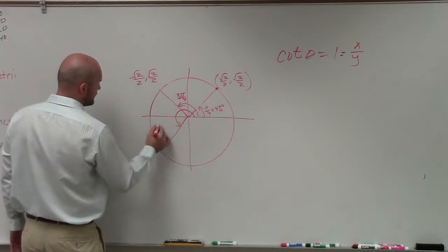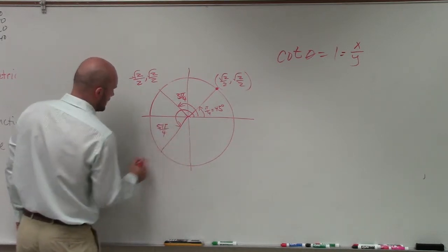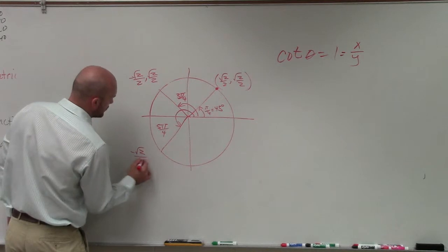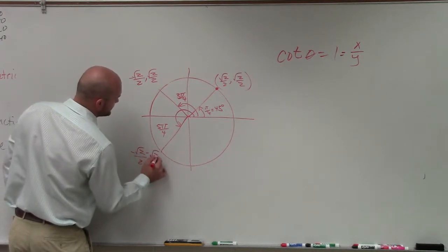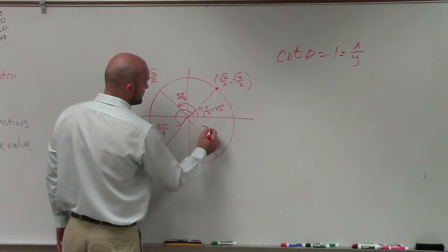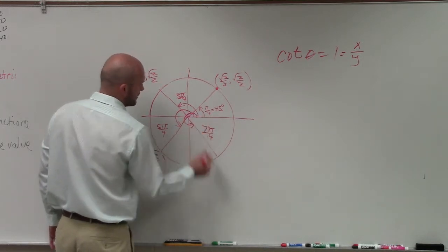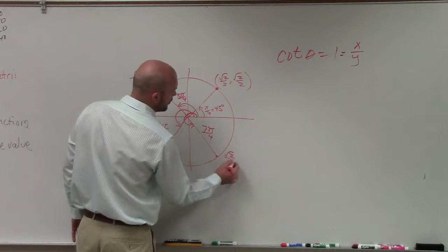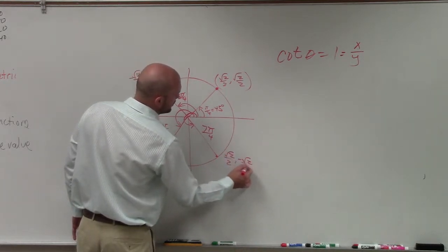Here, at 5π over 4, I have negative square root of 2 over 2, comma, negative square root of 2 over 2. And here, at 7π over 4, I have square root of 2 over 2, comma, negative square root of 2 over 2.